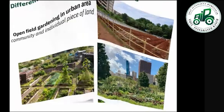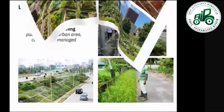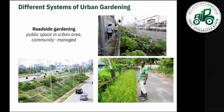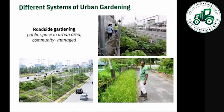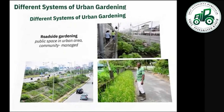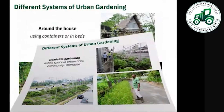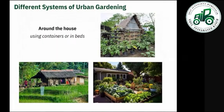Roadside gardening uses public space in an urban area as a community. As illustrated, people planted rice and different kinds of vegetables. On the upper right side of the presentation, they use sack gardening.